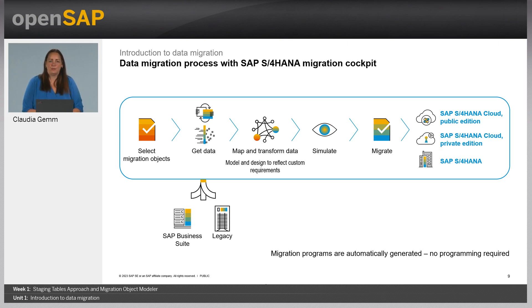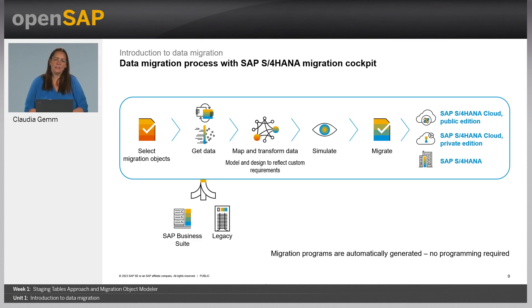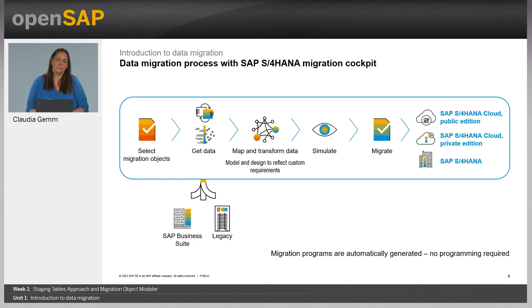Let's step into the migration process. You see here an overview of the different steps. You start with selecting the migration objects. In the on-premise environment, you have listed all available migration objects and you can choose which are relevant for your project. The second — and at the same time big — step is to get the data relevant for the load into the target system. For this activity, you use in the staging approach the template files which are provided for each single migration object. We have a closer look in the next unit.